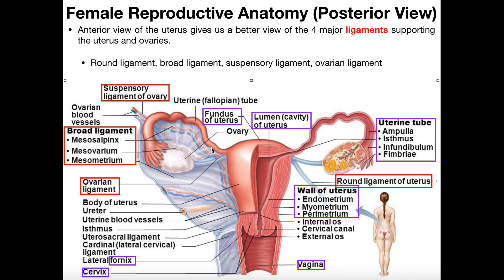It's especially important for the fallopian tubes, because if you look at these tubes, they're really just thin hose-like structures. If there were no ligaments, you could imagine them flopping all over the place — like a hose that's chaotically spraying water, flying all over the place. So we need these ligaments to anchor those structures in place.